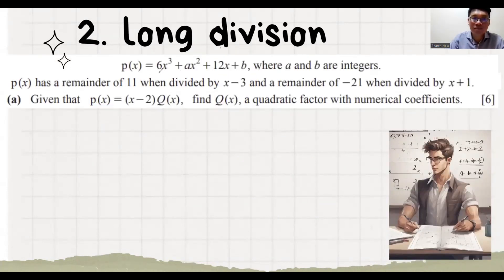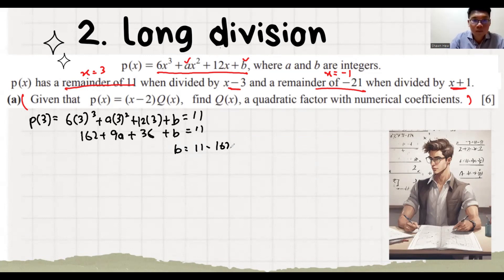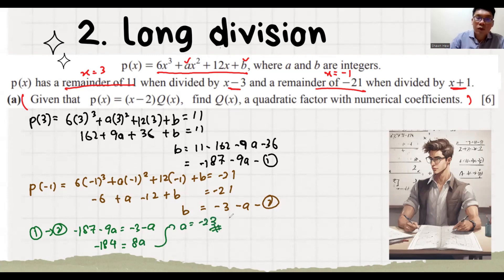The next question gives an equation with 2 unknowns and 2 pieces of information. They say there's a remainder of 11 when divided by x minus 3, which means when x equals 3, you get this remainder — that's equation 1. And a remainder of minus 21 when divided by x plus 1, which means when x equals to minus 1, you get that value — equation 2. With 2 equations you can solve for the 2 unknowns. We substitute equation 1 into equation 2 and find b equals 20. Congratulations, you get the values of a and b.